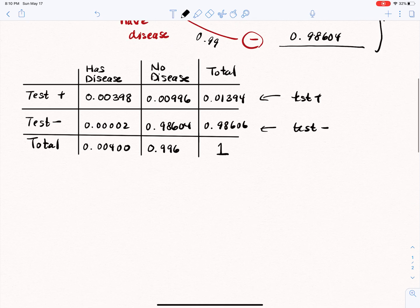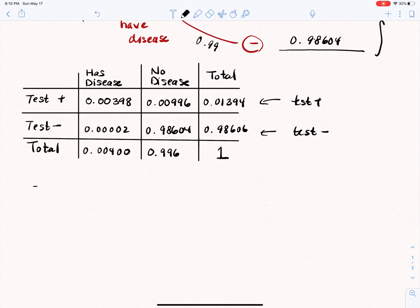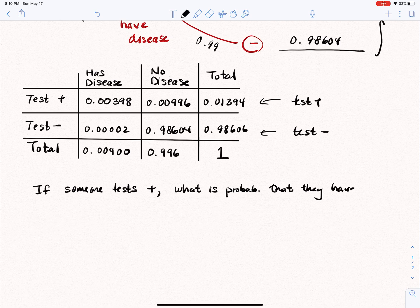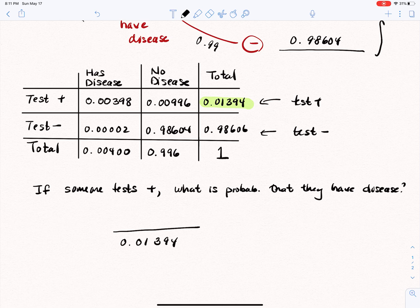So here is a question or two that we can answer based off of this information. Let's say someone gets a positive test result. So if someone tests positive, what is the probability that they have the disease? So that's a different kind of question. Well, if somebody tests positive, that means that we're in this category right here, right? So that means we're only looking out of the 0.01394. And so given that they tested positive, how many of them or what proportion of them actually have the disease? Well, that's this number right here,